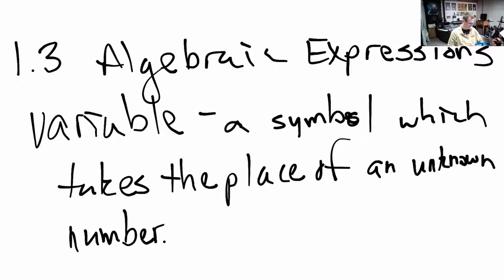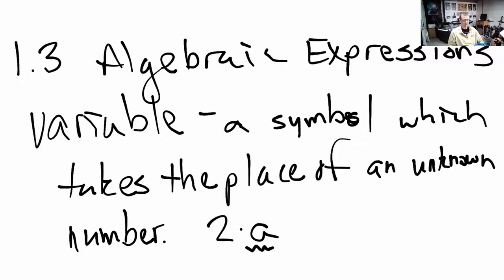Let's say I'm going to go to the store and buy apples, and I want to buy two apples but I don't know how much an apple costs. So I write this down: two times A, the cost of the apple - that's what I'm going to spend. What I've just done is substituted a symbol that is not a number for a number. That price of the apple can change over time - it can go up tomorrow, it can come down in a week depending on the season.